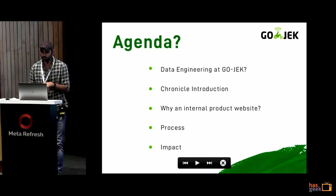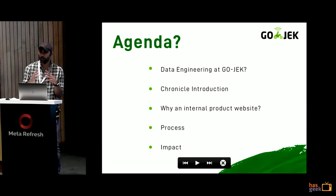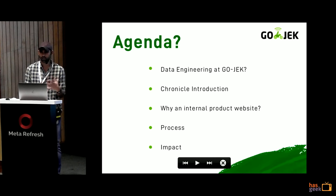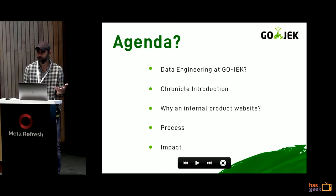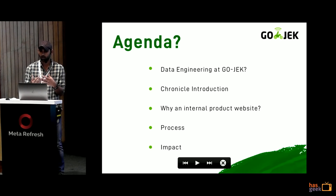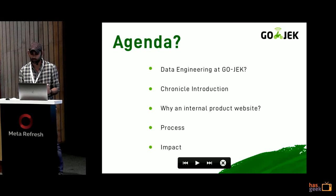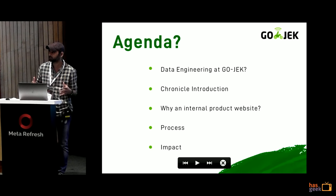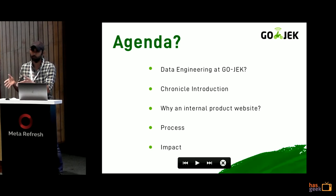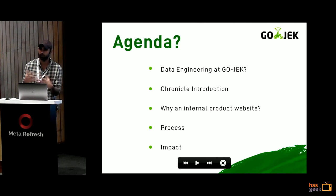So, the agenda. Today we will mostly talk about: first, the data engineering landscape at Gojek — what we do, what kind of products we build. Then I will talk about Chronicle, which is one product — our technical documentation — which we treat as a pure product in itself. Then why you need an internal product website even when your customers are internal. Why do you need a micro website? We will talk about the entire process from having nothing to having a proper product website, and finally what exactly was the impact of this whole exercise.